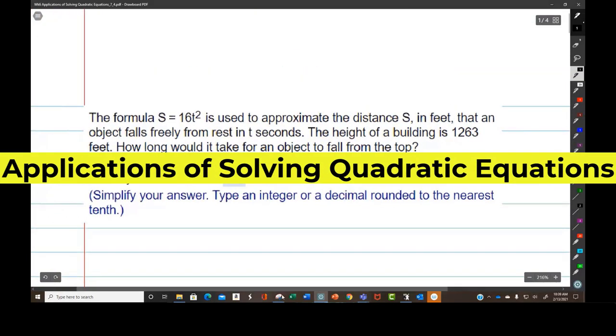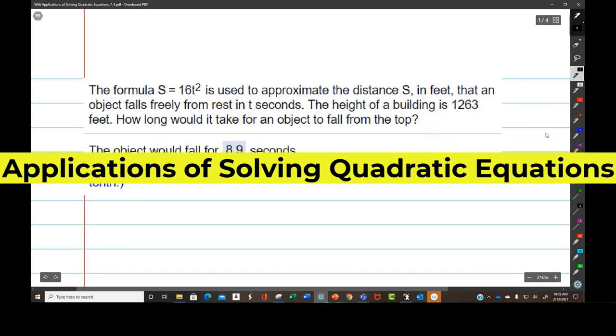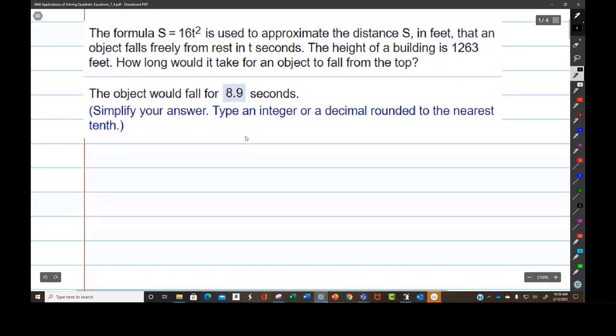These are four word problems. We should at least start them. The formula S equals negative 16 t squared is used to approximate the distance S in feet that an object falls freely from rest in t seconds. The height of a building is 1,263 feet. How long would it take an object to fall from the top?